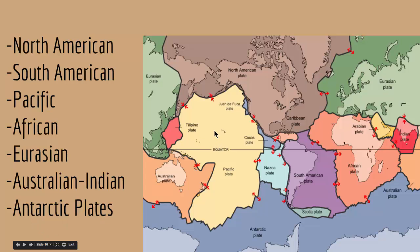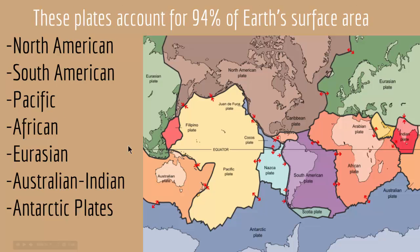These are the major plates — for example, here is the Pacific plate and here is the Antarctic plate. The entire crust of the Earth is not one big unit but is broken down into several plates. These major plates account for 94% of the Earth's surface. The continents are moving because they are riding on these plates.